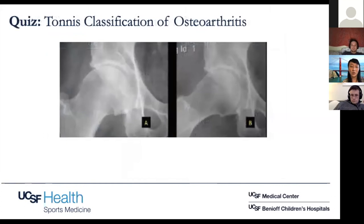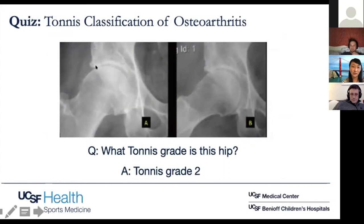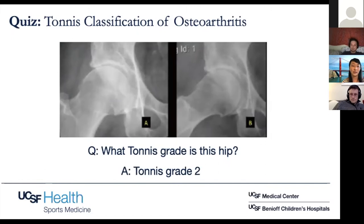Quick quiz: what Tönnis grade is this hip? The answer is two — I look for the most severe joint space narrowing and measure that. If you look here, that space is definitely less than two millimeters. I'll tell you why we care about grading the Tönnis grade when we get to the outcome studies.